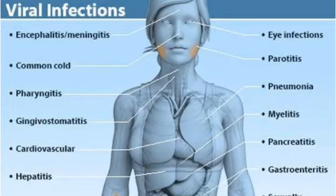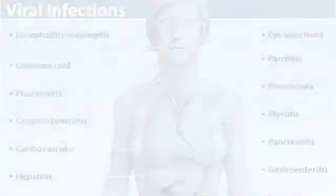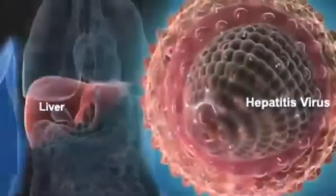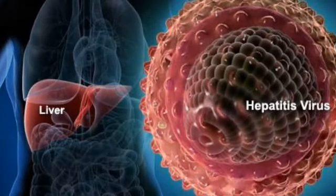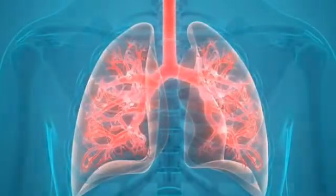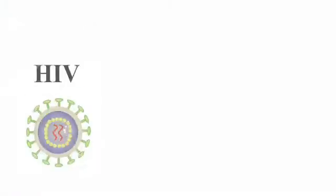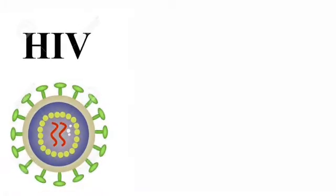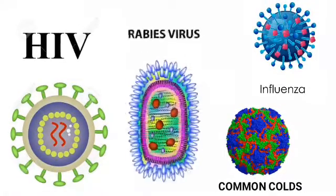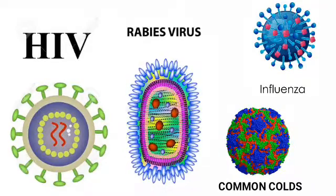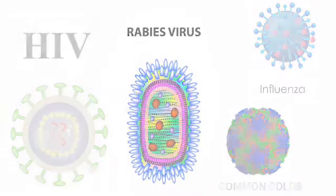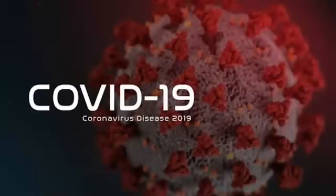Viruses are usually quite specific about the area of the body they attack — for example, the liver, the respiratory tract, or the blood. Common viruses include HIV, influenza, the common cold, and the rabies virus. Viruses can also cause pneumonia or sinusitis. The new coronavirus SARS-CoV-2, which causes COVID-19, is also a virus.